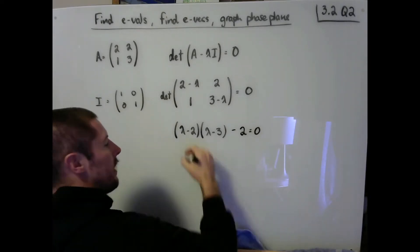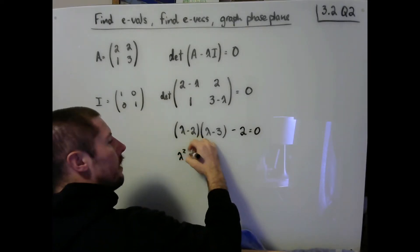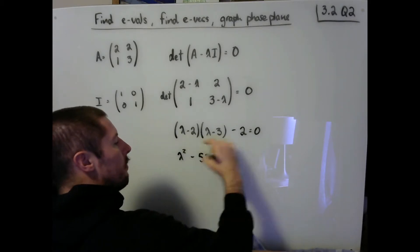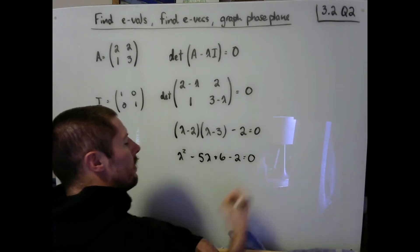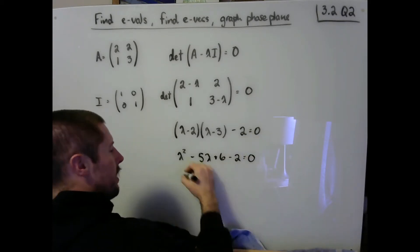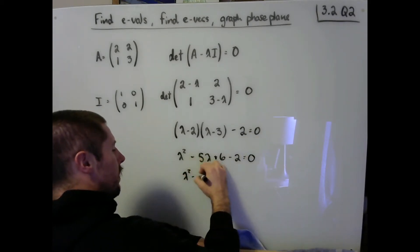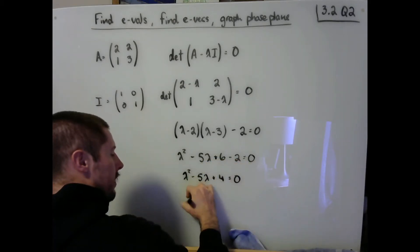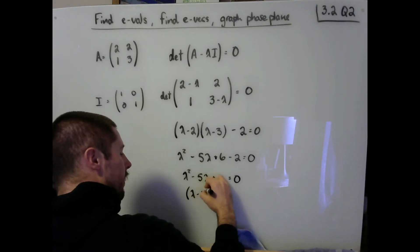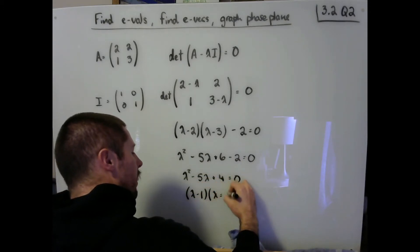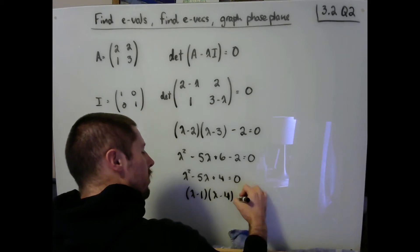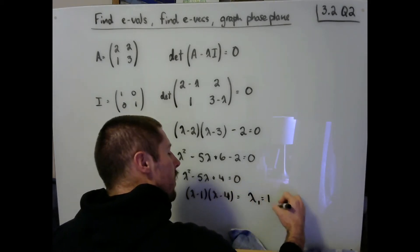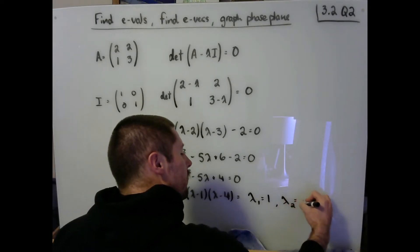And now we just want to solve this quadratic. So I'm going to look here to see lambda squared minus 5 lambda plus 6 minus 2 equals 0. These are going to combine to give us a plus 4. And we can factor this to arrive at the eigenvalues of lambda 1 is 1 and lambda 2 is 4.